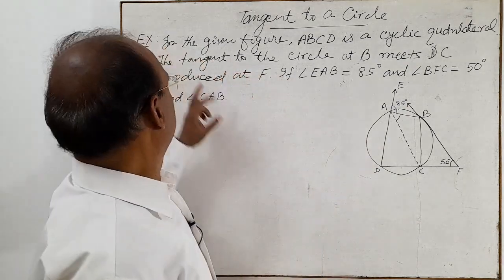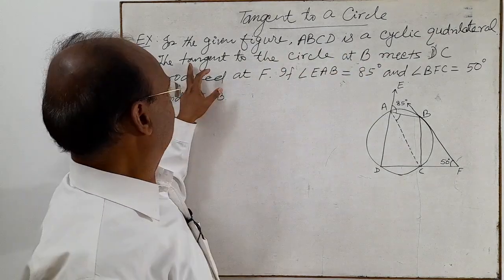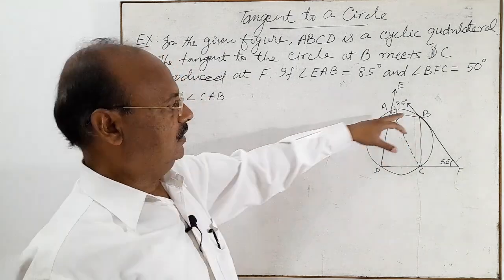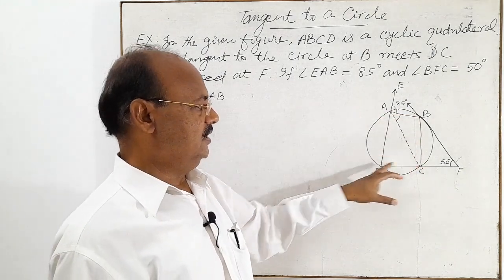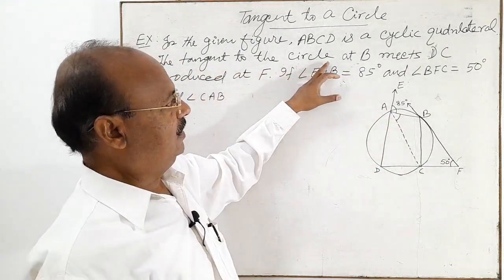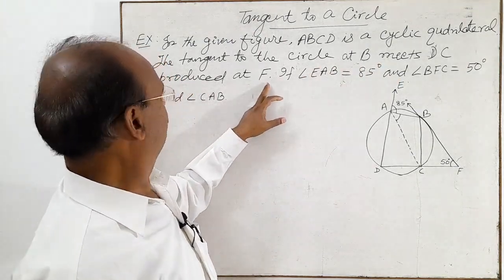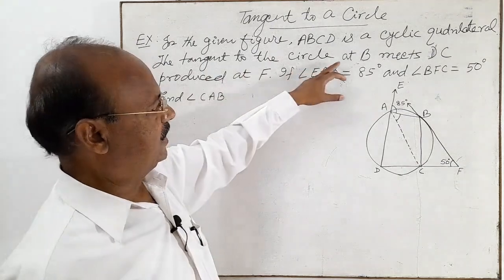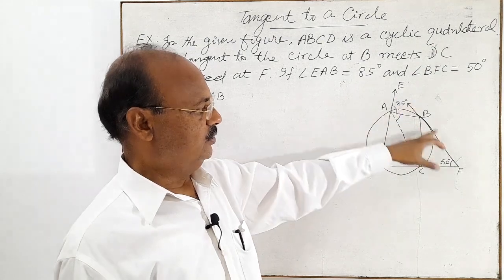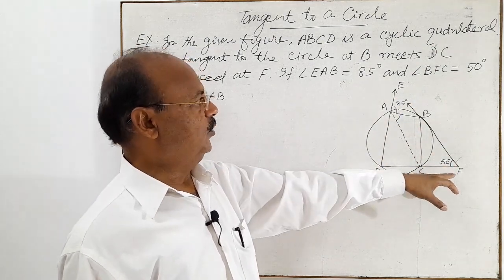The question is: in the given figure, ABCD is a cyclic quadrilateral. All four vertices A, B, C and D are lying on a given circle. The tangent to the circle at point B meets DC produced at F.